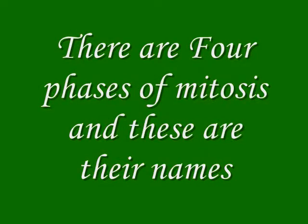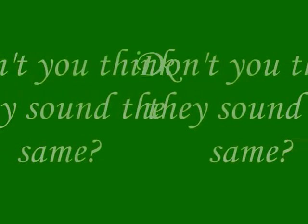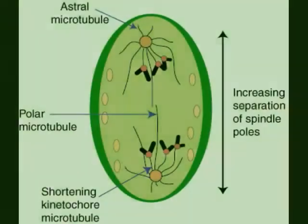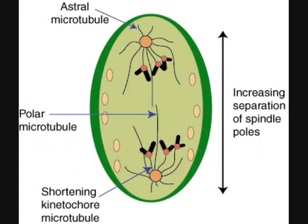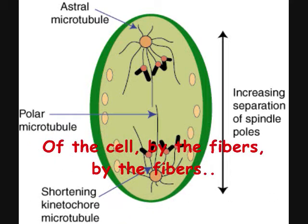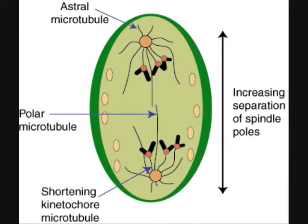There are four phases of mitosis and these are the names: Prophase, metaphase, anaphase, telophase — don't you think they sound the same? In anaphase, chromatids are pulled to opposite ends of the cell by the fibers of the cell.